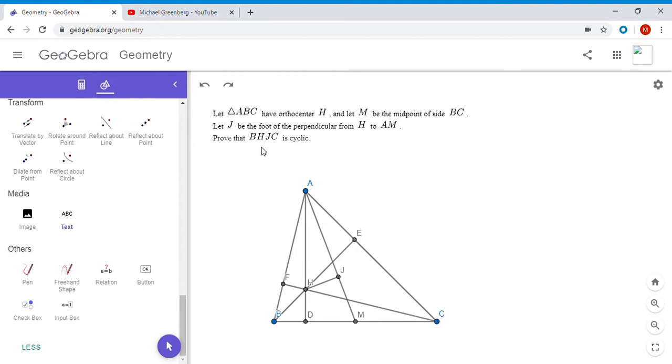This is called the HM theorem. Feel free to pause the video and give it a shot. Alright, I hope you enjoyed it and now I will go over the solution. The problem is we have a triangle ABC, the orthocenter is H (the intersection of the three perpendiculars from A, B, and C to each side), M is the midpoint of side BC, and J is the foot of the perpendicular from H onto the median AM. We want to show that BHJC is a cyclic quadrilateral.